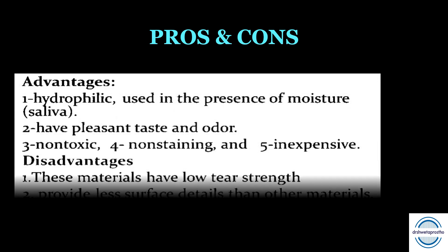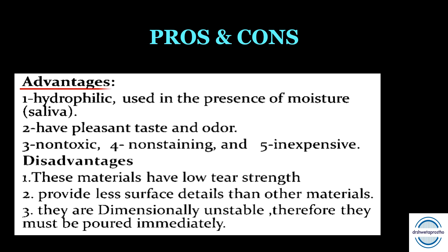Advantages of alginate: these are hydrophilic materials usable in the presence of moisture, so no isolation is needed and casts can be poured easily. They have pleasant taste and odor, are non-toxic and non-staining, adding comfort for the patient. They are inexpensive. Disadvantages: low tear strength limits use in fixed partial dentures; less surface detail than elastomeric materials; dimensionally unstable so must be poured immediately; only one cast can be retrieved, unlike multiple casts possible with addition silicone.